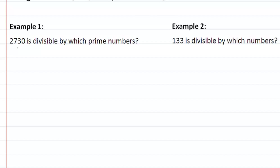For example 1, we have 2730 and we are looking to see what it is divisible by. We are namely looking at 2, 3, and 5.